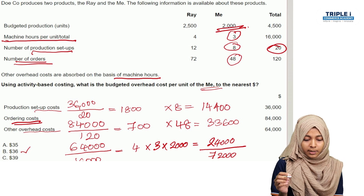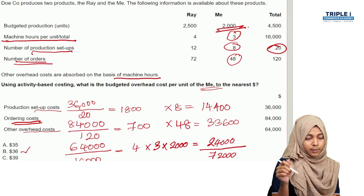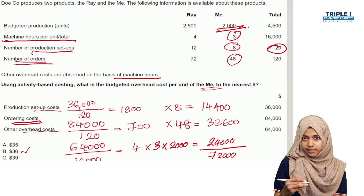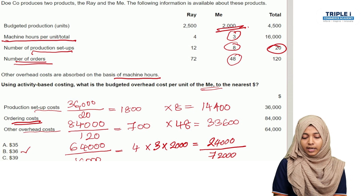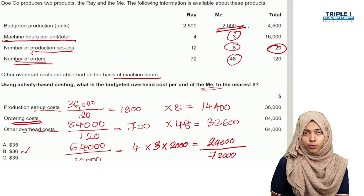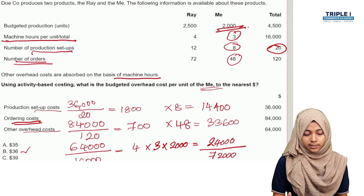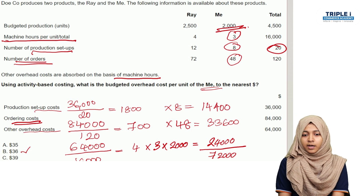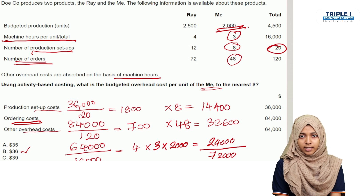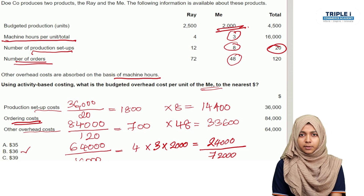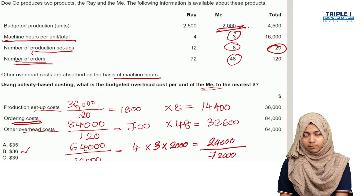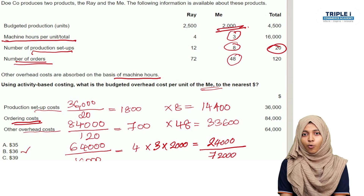So the total overhead cost for 'Me' is $72,000 divided by 2,000 units, giving a cost per unit of $36. The answer is $36 per unit. I hope you guys are clear. Thank you.